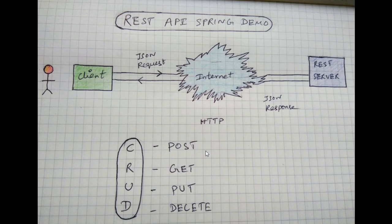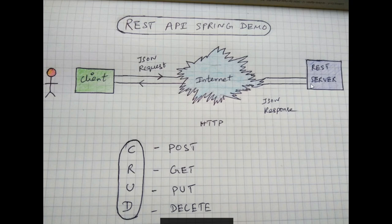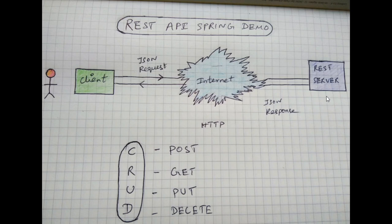If you use a client or a server, you can communicate with one client. If you use a JSON request — for example, if you create an employee — you send a JSON request from the client to the server, and the server returns a JSON response. This is the overall flow.